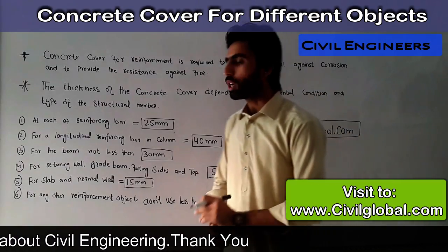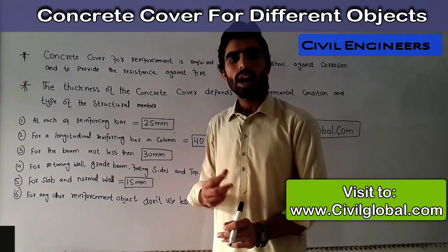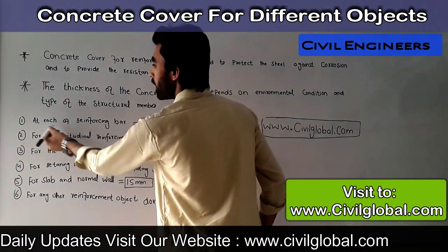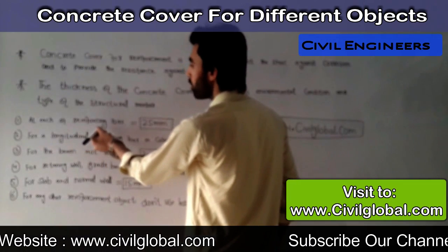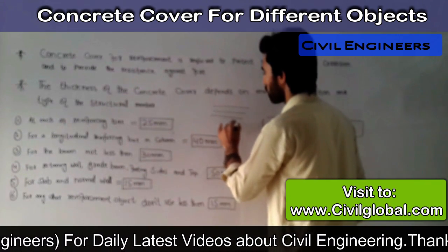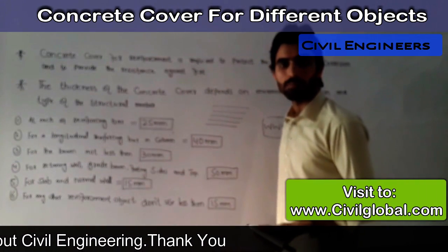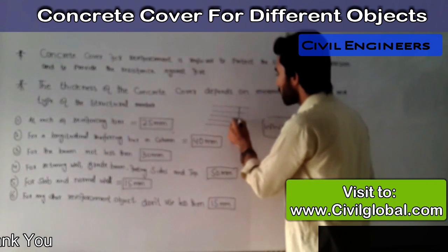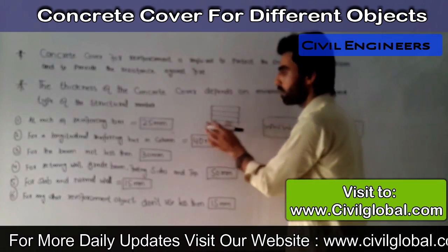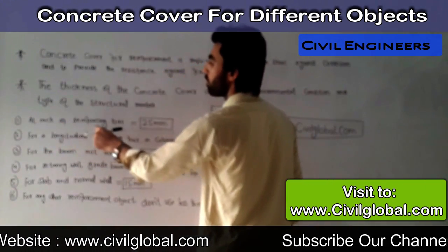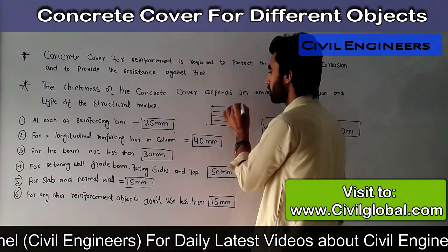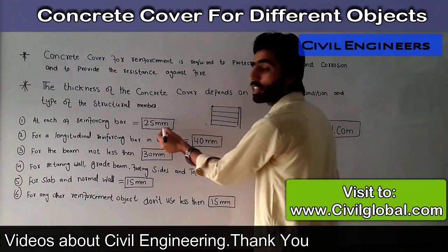Let's look at how much concrete cover is required for different structural members. The first one is at the end of each reinforcing bar. So if you have bars in any building member, on one side and the other side, the concrete cover at the end of the reinforcing bar must be 25 millimeters.